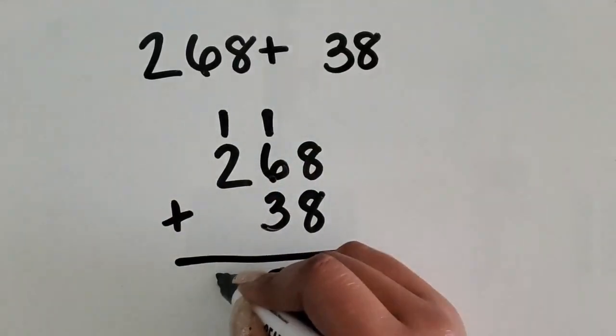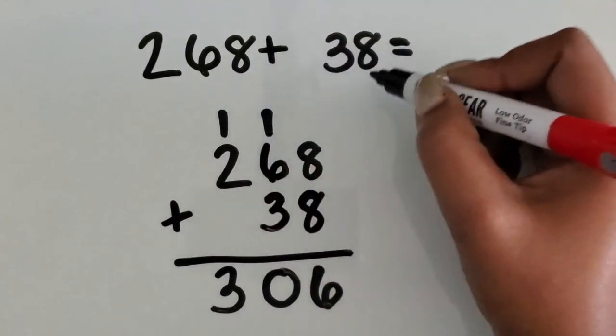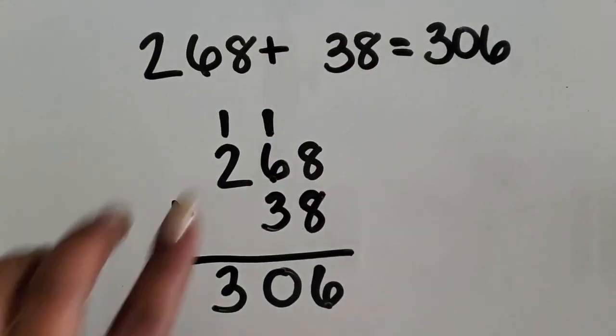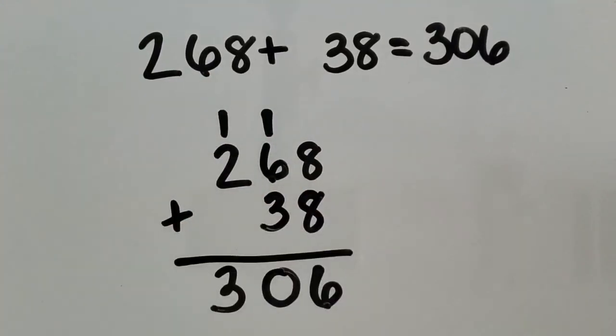Two hundreds plus one hundred is three hundred. The sum of 268 plus 38 is 306. We regrouped, or we added a three-digit number plus a two-digit number together using the standard or traditional algorithm.